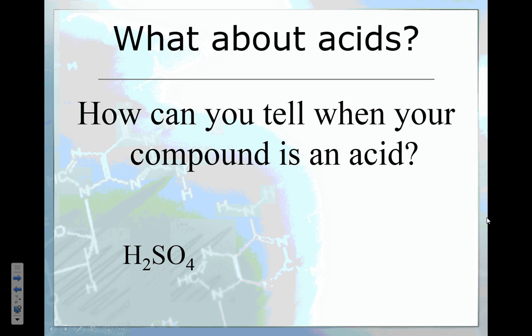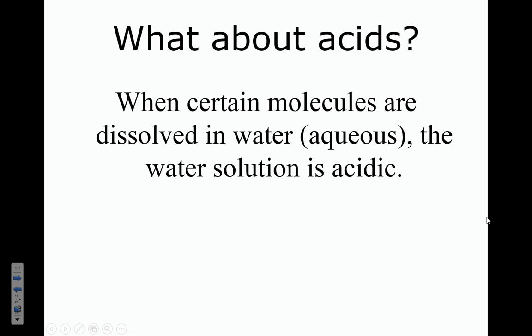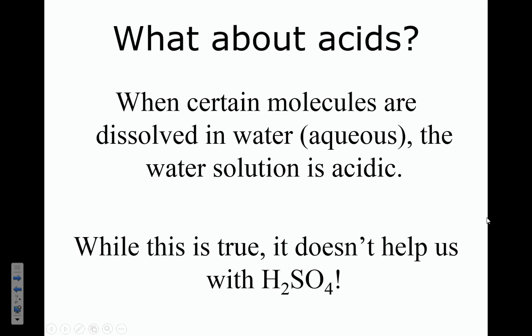So how can you tell when your compound is an acid? When we look at H2SO4, what are the clues? We have clues for ionic compounds — if it starts with a metal or ammonium, it has cations and anions, so it's ionic. We have clues for molecules — two non-metals is a dead giveaway. If we only have one element, that's an elemental substance.